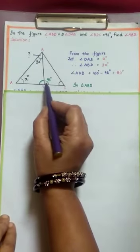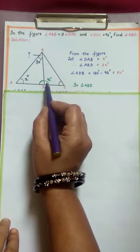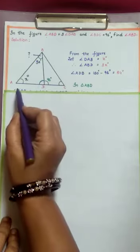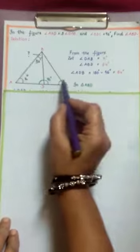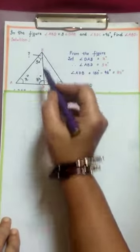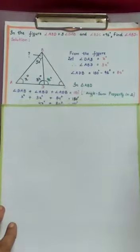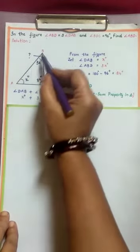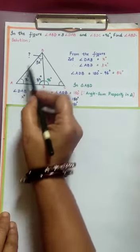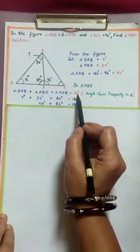Now observe: angles BDC and ADB form a linear pair, so their sum is 180 degrees. From 180 subtract 96 degrees to get angle ADB as 84 degrees. In triangle ABD: angle DAB plus angle ABD plus angle ADB equals 180 degrees by the angle sum property. Substituting: X degrees plus 3X degrees plus 84 degrees equals 180 degrees.